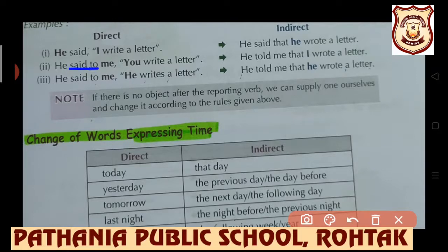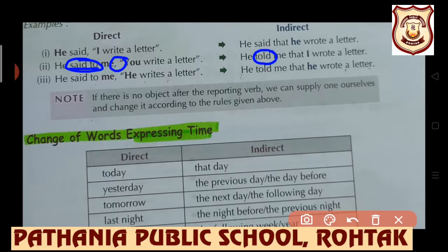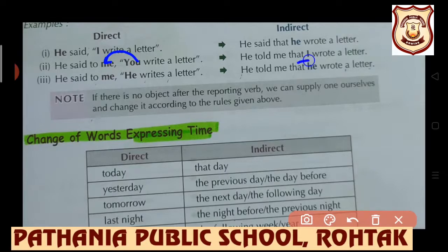He said to me, 'You write a letter.' Here, 'said to' is changed into 'told.' He told me — remove the comma and inverted commas, and add 'that.' Who is 'you' here? 'You' is second person, and second person changes according to the object of the reporting clause, so 'you' changes into 'I.' The first form of the verb changes into the second form. The indirect form is: He told me that I wrote a letter.